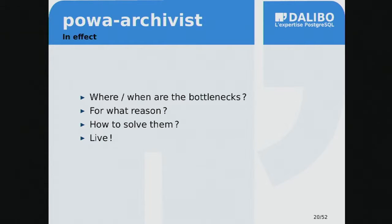The idea is to know where and when a bottleneck happens. Since we've collected data over a specific timeframe, we can see when the database was slow. As a DBA, you often get a user calling to say the database is slow, and you look at the server and everything seems fine. But with historical data, you can check when there was a problem and dig into it — not only at a specific time, but also by database and query. Since we provide different counters, you can see if data wasn't in cache anymore, if too many temp files were generated, and get to the root of the problem more quickly.